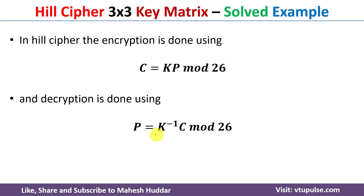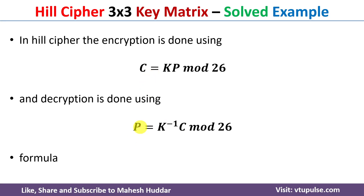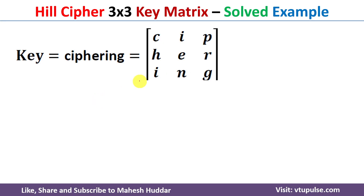Decryption is done using the formula P = K⁻¹·C mod 26, where K⁻¹ is the inverse of the key matrix, C is the ciphertext obtained in the previous step, and P is the plain text. We will now discuss how encryption and decryption are done one by one.